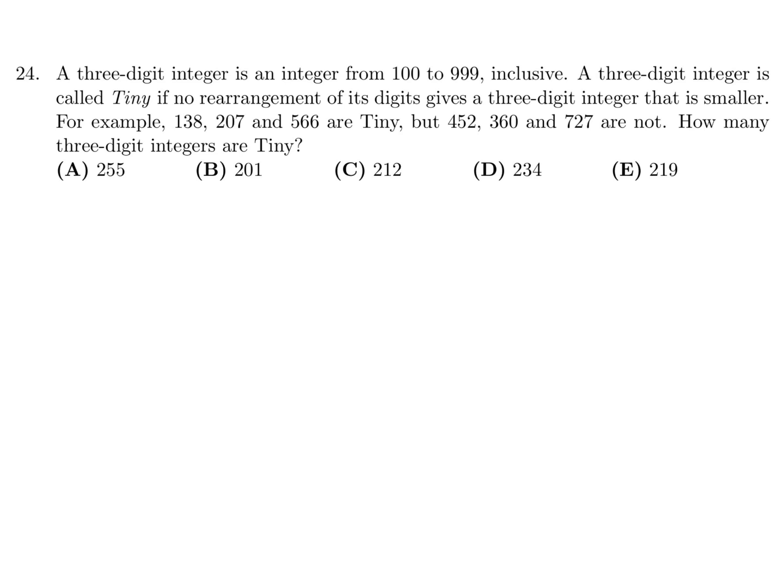A three-digit integer is an integer from 100 to 999 inclusive. A three-digit integer is called tiny if no rearrangement of its digits gives a three-digit integer that is smaller. For example, 138, 275, and 660 are tiny, but 452, 360, and 727 are not. How many three-digit integers are tiny?